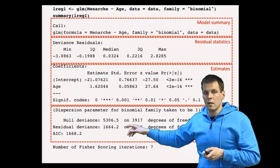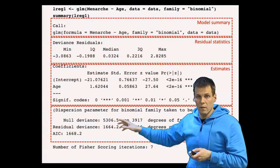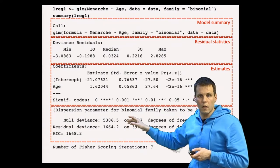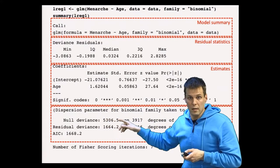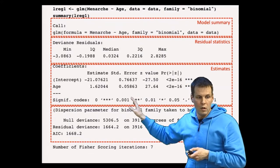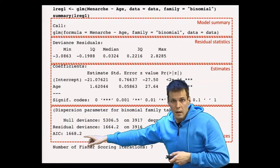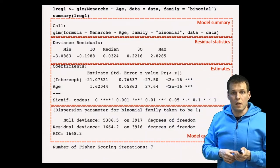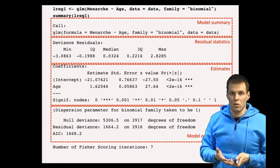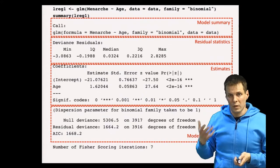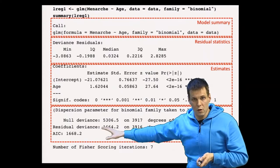The null deviance compares how much better this model is versus a model that doesn't predict the dependent variable at all. AIC is a statistic that allows comparison of non-nested models — it's similar to adjusted R-squared. It doesn't have a direct interpretation on its own; a smaller value is better.